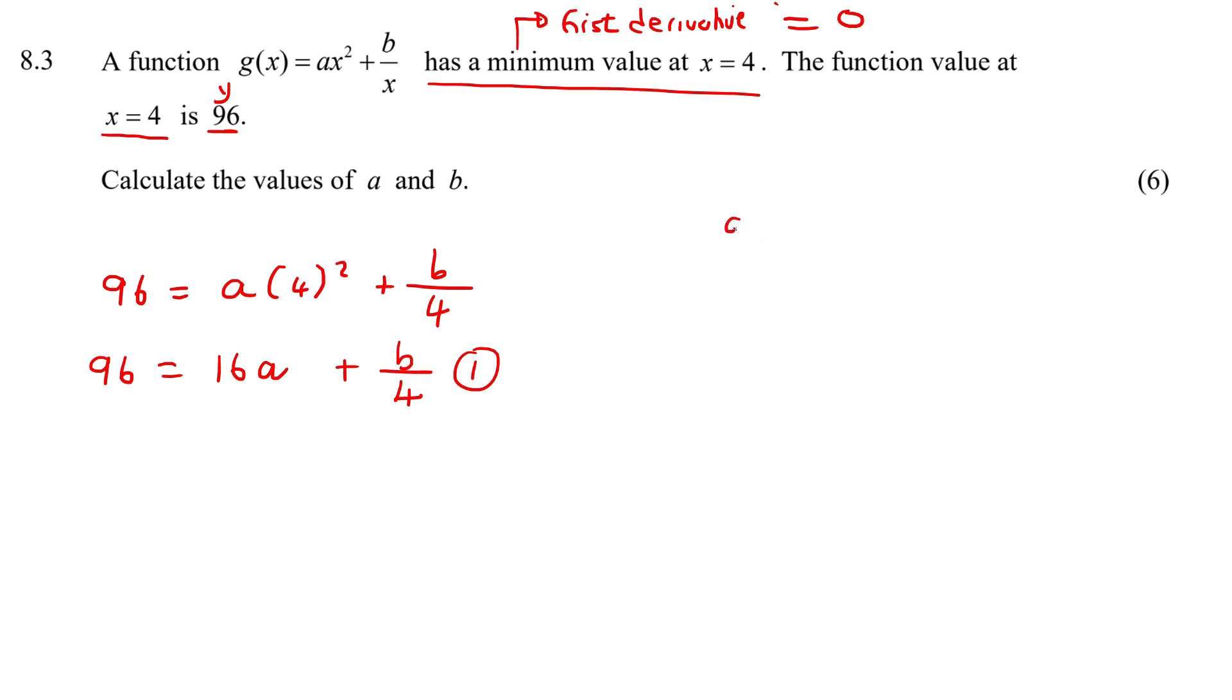So we will do just that. We've got g(x) = ax² + b/x. But now to take the first derivative, we want that x to come to the top like that. Now we can take the first derivative.